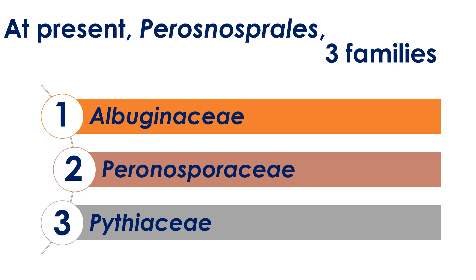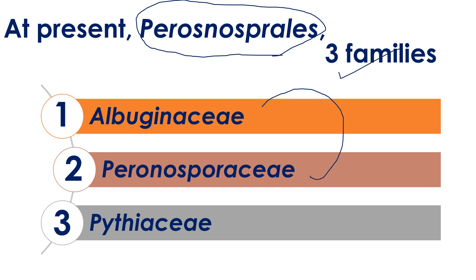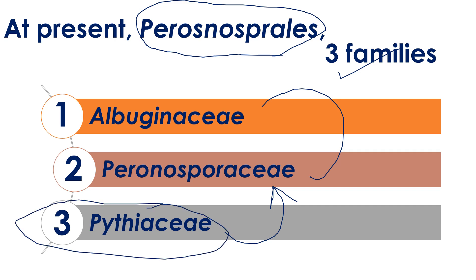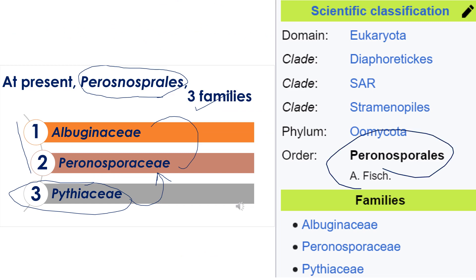At present, Peronosporales contains three families — previously we discussed only two: Albuginaceae and Peronosporaceae. But at present, Pythiaceae is also placed under Peronosporales. They are simply shifting genera from one place to another, but the characters, life cycles, important points, and features all remain the same. In Cricketal classification, Peronosporales contains two families; in Wikipedia and present classification, it contains three families — Albuginaceae, Peronosporaceae, and Pythiaceae.